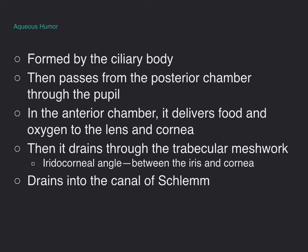The aqueous humor is formed by the ciliary body. It then passes from the posterior chamber through the pupil. In the anterior chamber, it delivers food and oxygen to the lens and the cornea. Then it drains through the trabecular meshwork and the iridocorneal angle between the iris and the cornea, and from that trabecular meshwork it drains into the canal of Schlemm. This is important to know as we discuss the disorders coming up next.